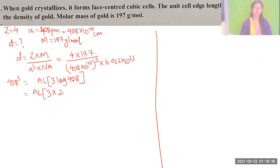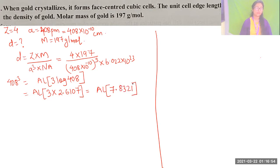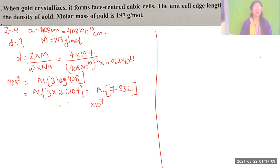Anti-log of 7.8321: characteristic 7 means × 10⁷. From anti-log table, 0.83 with mean difference 2 and 1 gives 6794. So a³ = 6.794 × 10⁷ × 10⁻³⁰ = 6.794 × 10⁻²³ cm³. Substituting back: D = 4 × 197 / (6.794 × 10⁻²³ × 6.022 × 10²³). The 10 powers cancel, leaving D = 4 × 197 / (6.794 × 6.022).